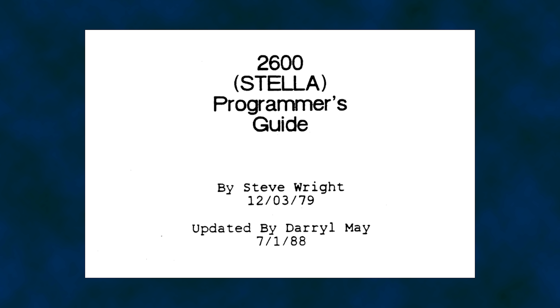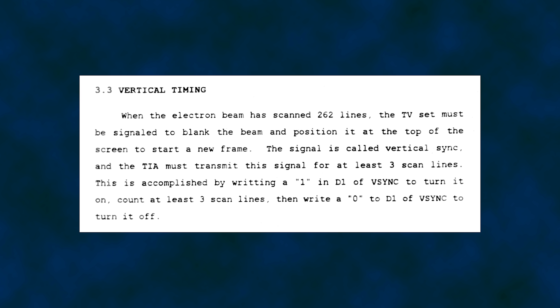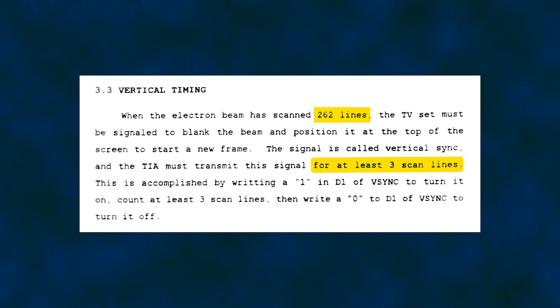I want to cite a section of the Stella Programmer's Guide concerning vertical timing: when the electron beam has scanned 262 lines, the TV must be signaled to blank the beam and position it at the top of the screen to start a new frame. This signal is called vertical sync and the TIA must transmit this signal for at least three lines. This is accomplished by writing a 1 to D1 of V-Sync to turn it on, counting at least three lines, then writing 0 to D1 of V-Sync to turn it off. The minimum of three scanlines for V-Sync, as well as a total scanline count of 262, weren't really required — and since the duration and timing of V-Sync were flexible to the programmer, the programmers flexed them.